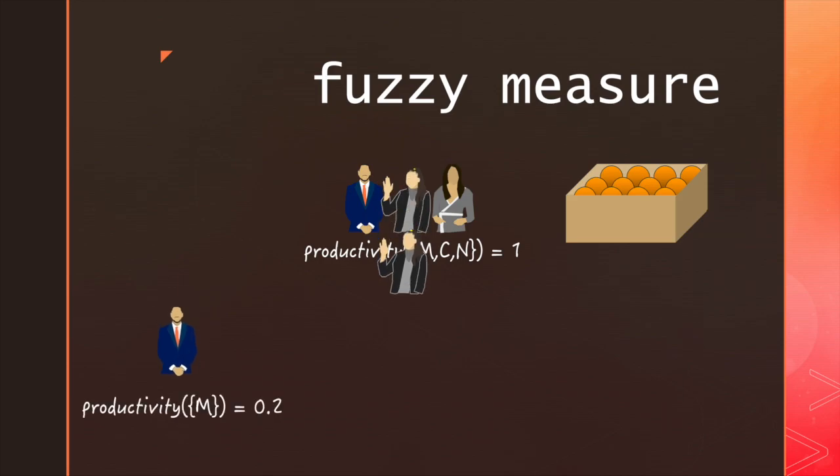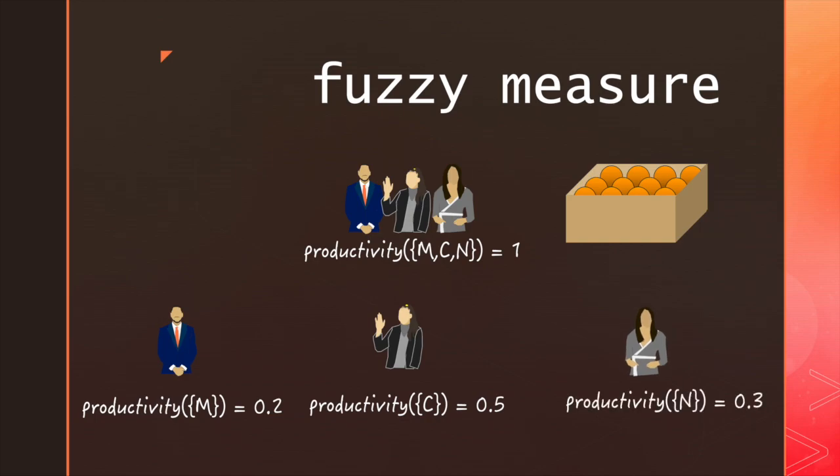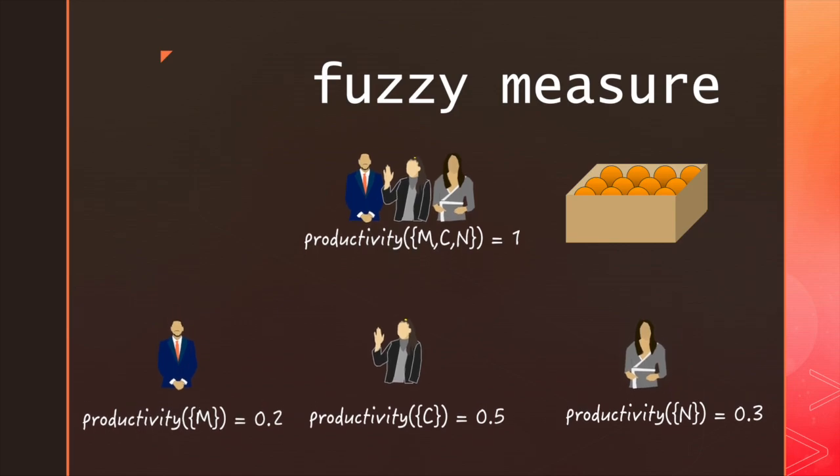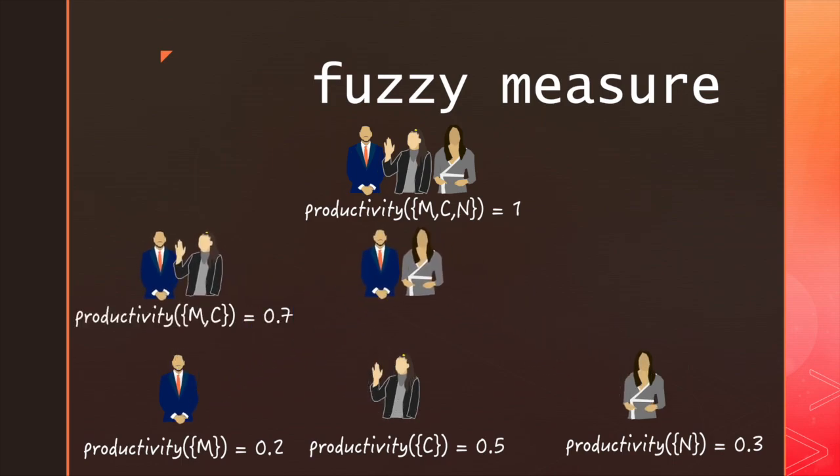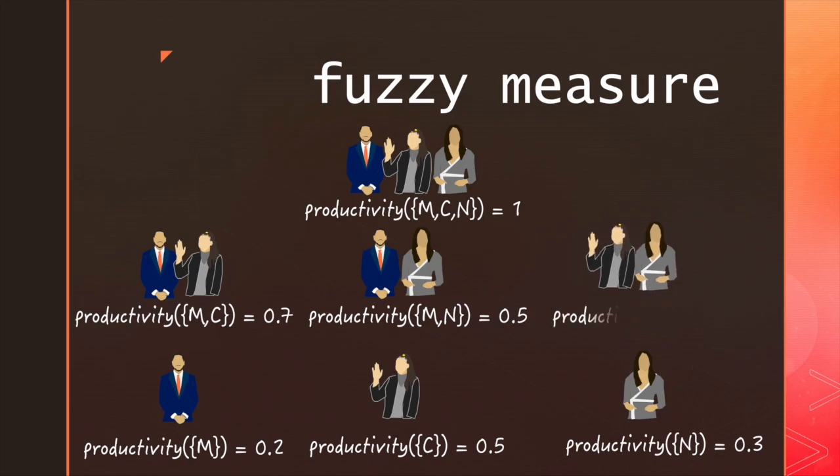Now individually it might be that Melo produces 0.2 crates, Candice produces 0.5 crates, and Nika produces 0.3, which would make sense because this adds to one. And we could infer then that Candice and Melo together produce 0.7 crates, Melo and Nika produce 0.5, and Candice and Nika produce 0.8.